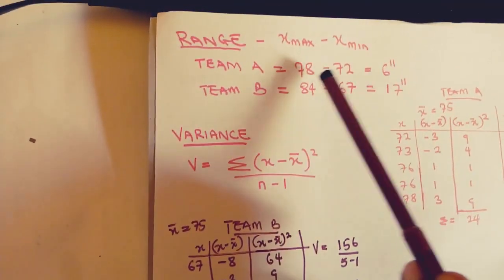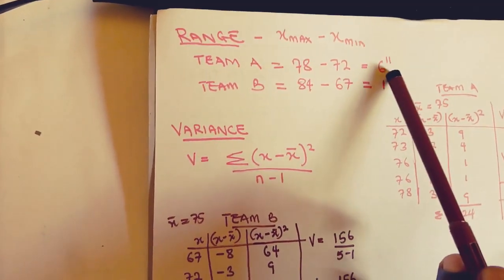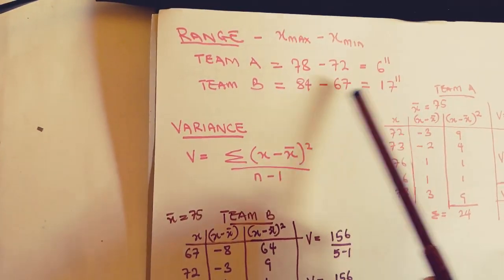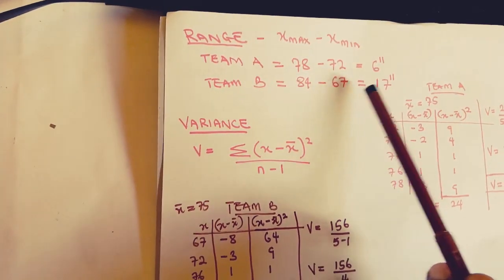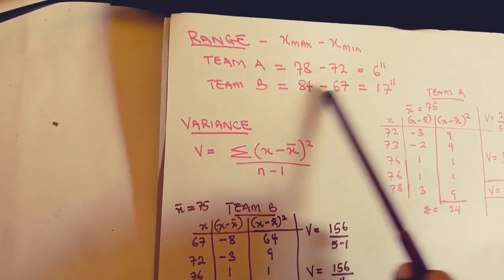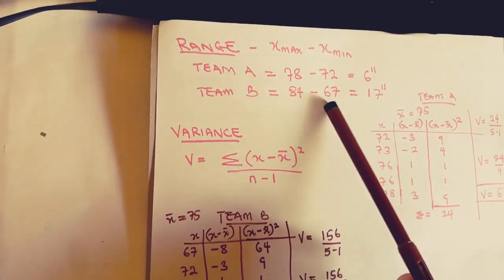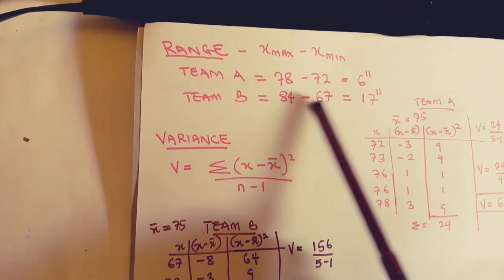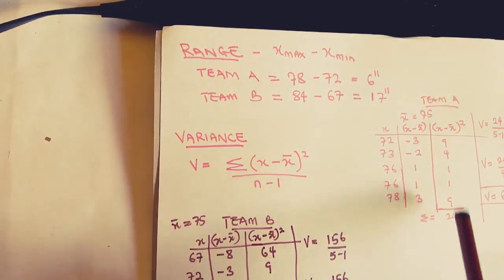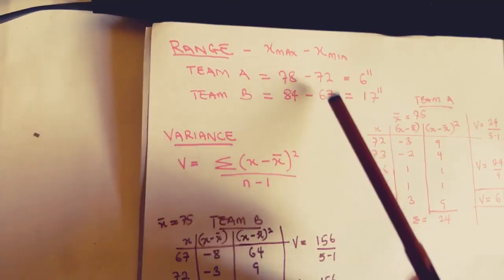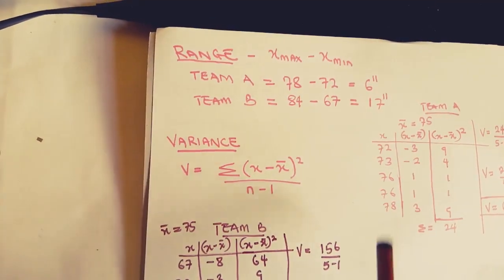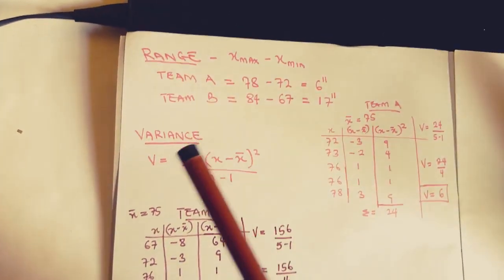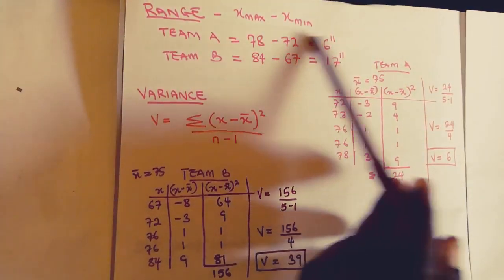That gives us an idea of how spread out the data is — there is only a 6-inch difference between the tallest and shortest player on Team A. For Team B, the range is 84 minus 67, which equals 17 inches. There is a very tall player and a very short player, and the difference between their heights is 17 inches. So we can see that these two teams are actually different — Team B's players vary much more in height compared to Team A.